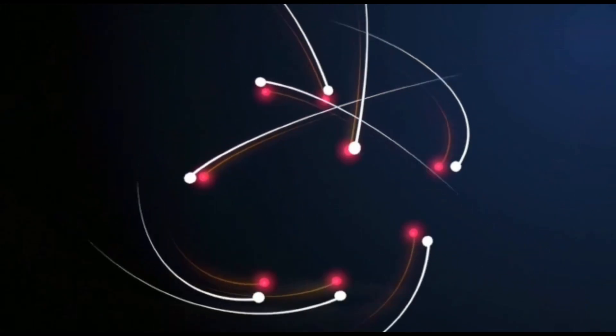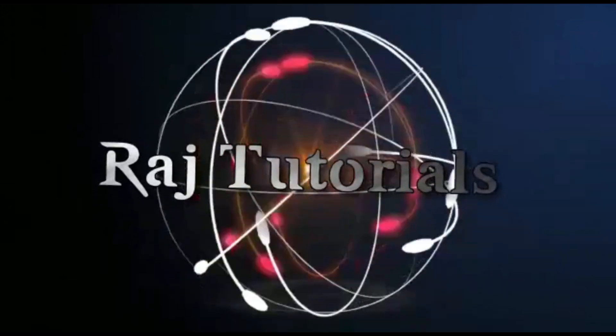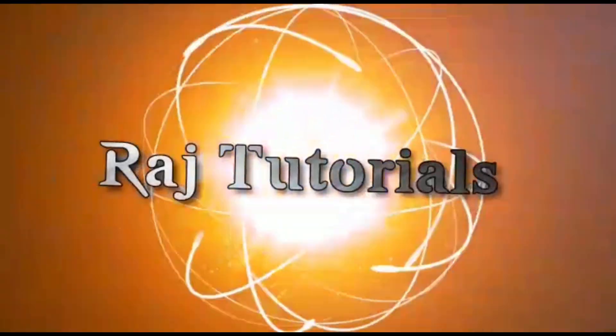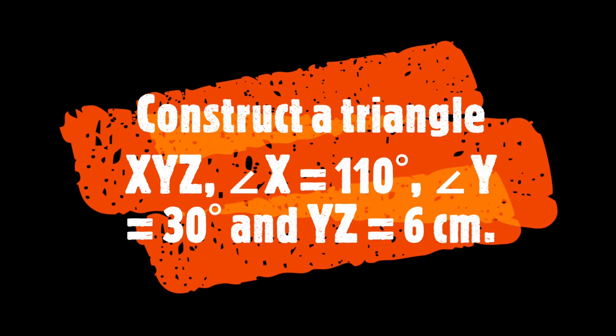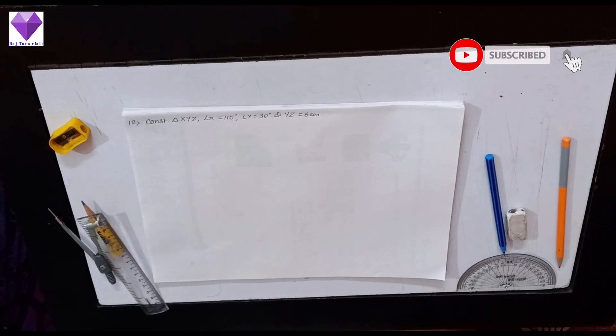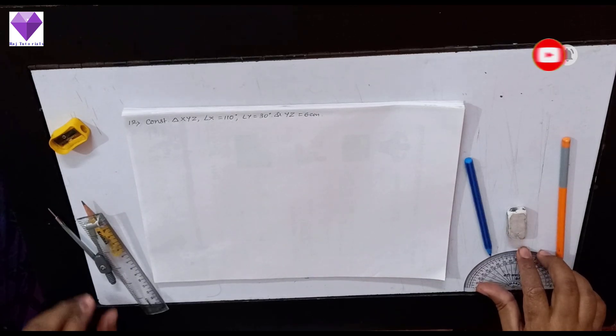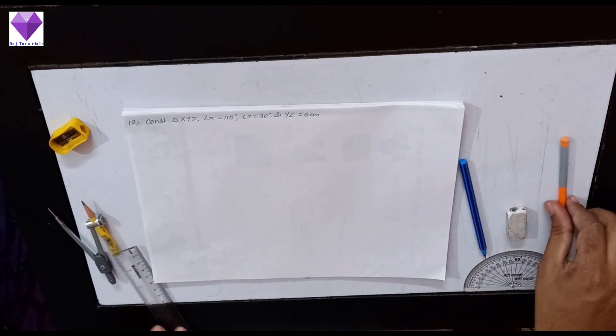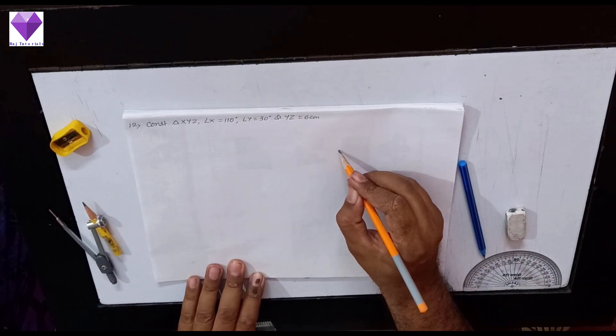Hey everyone, now we are going to construct triangle XYZ where angle X equals 110 degrees, angle Y equals 30 degrees, and YZ equals 6 cm.